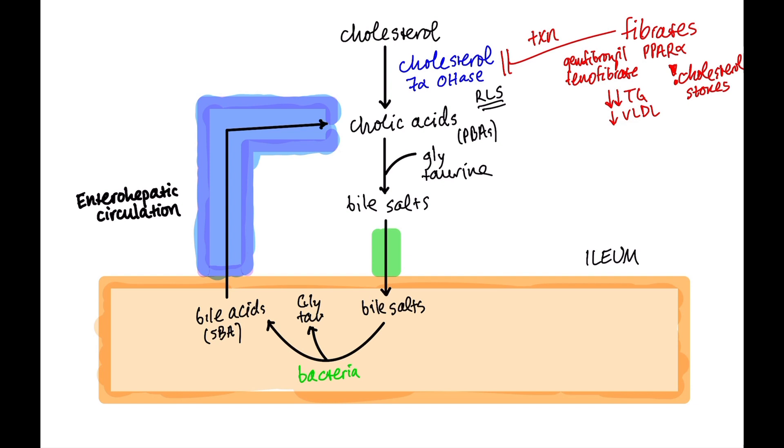Secondary bile acids, about 95% are reabsorbed into the portal circulation. We call this the enterohepatic circulation. And they'll make their way back to the liver. So they're recycled. That's 95%. The other 5% go out the stool. That's the pathway. What you need to know is that you're starting with cholesterol. Cholesterol 7-alpha-hydroxylase is the rate-limiting step. And it is affected by fibrates. That bile salts go into the small intestine. They're deconjugated by bacteria. They're reabsorbed as secondary bile acids. And 95% is reabsorbed.